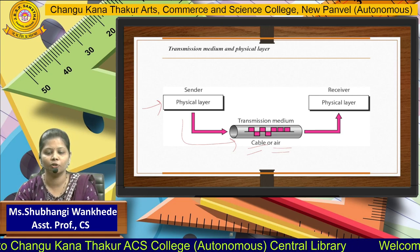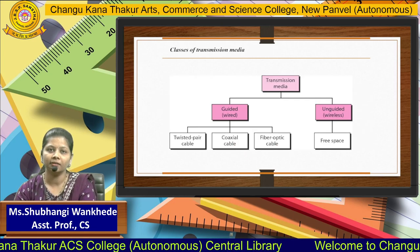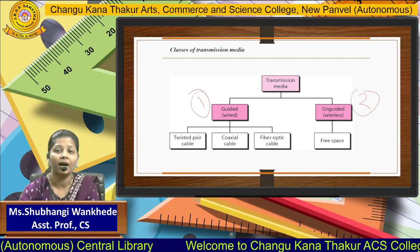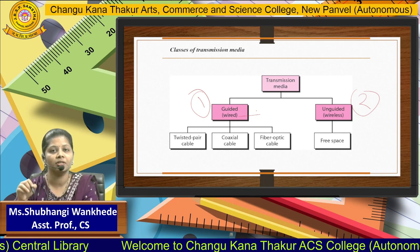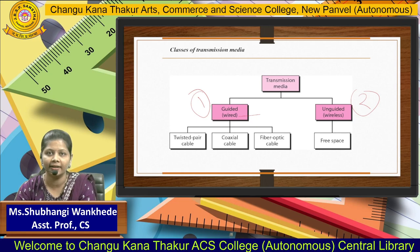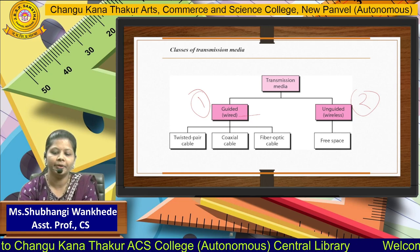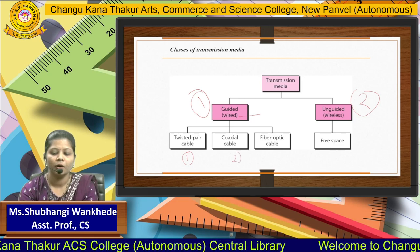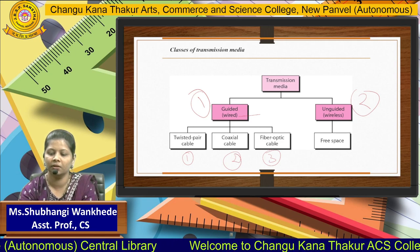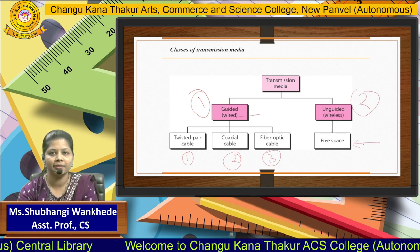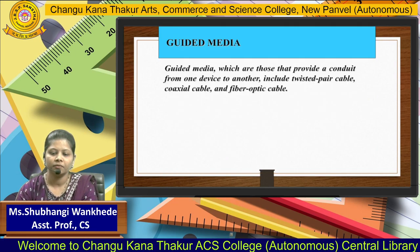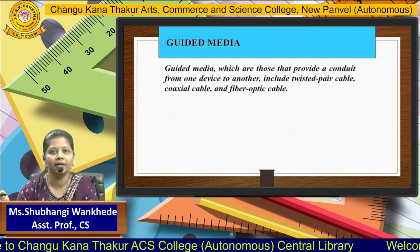There are two basic classes of transmission media. The first is guided media and the second is unguided media. Guided media consists of wires, while unguided media is wireless. In guided media there are three types: twisted pair cable, coaxial cable, and fiber optic cable. These are the three main types of cables used as the medium. In unguided media, free space is the medium.